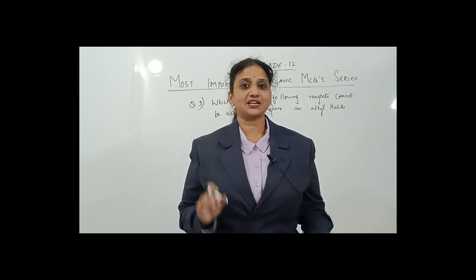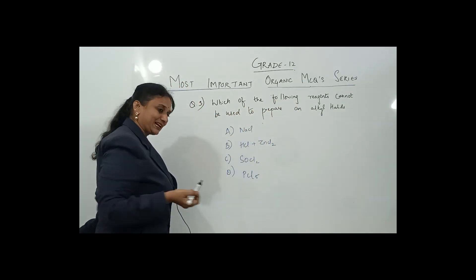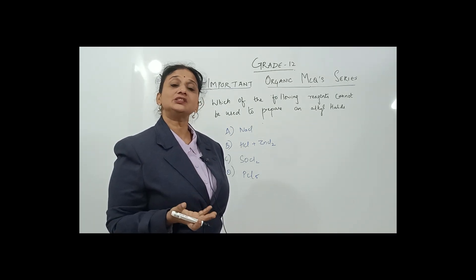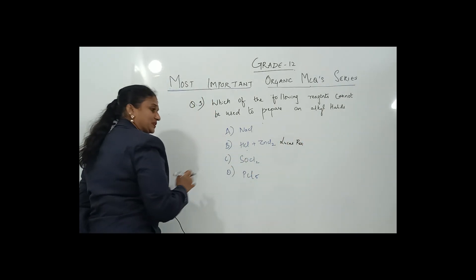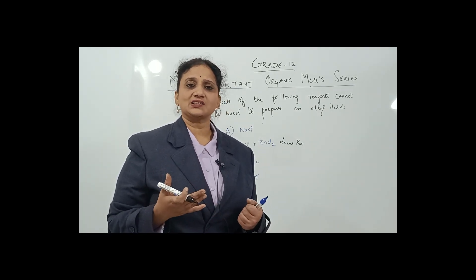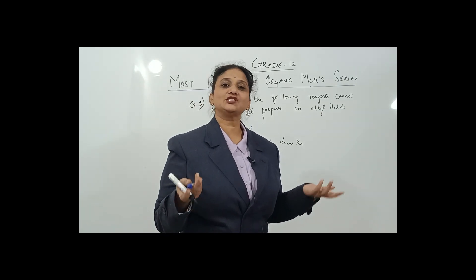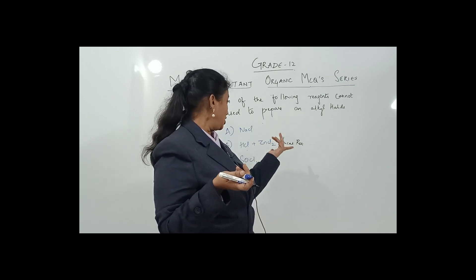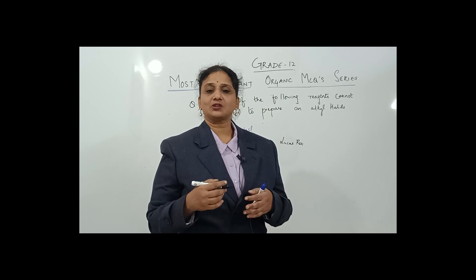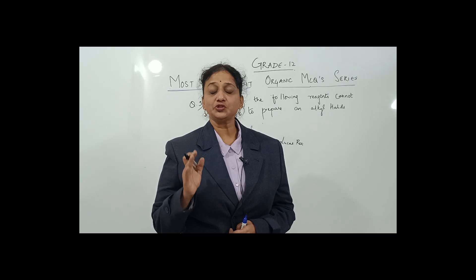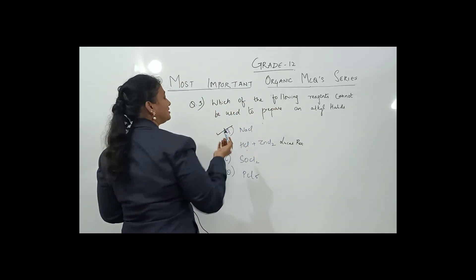Next question: which of the following reagents cannot be used to prepare an alkyl halide from alcohol? The options are Lucas reagent, thionyl chloride (SOCl₂), PCl₅, PCl₃, and NaCl. Lucas reagent, thionyl chloride, PCl₃, and PCl₅ are all used to convert alcohol to alkyl halide. However, NaCl is a salt — it cannot be used to convert alcohols to alkyl halides. So the correct answer is NaCl.